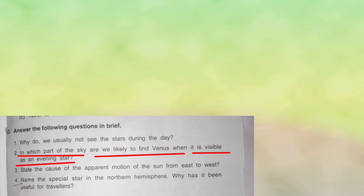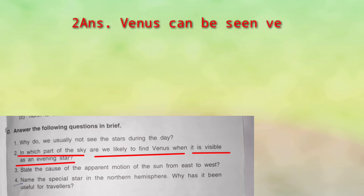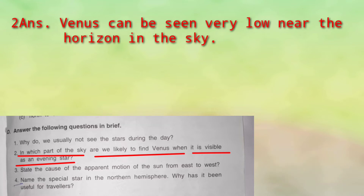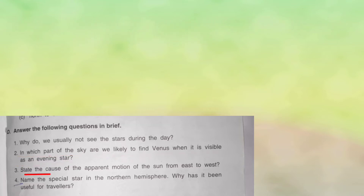Venus can be seen very low near the horizon — jahaan par hume zameen se khade hokar dekhe toh woh dikhta hai. Next: state the cause of apparent motion of sun from east to west. Jo motion of sun hai, sun east se nikalte hue aur west mein chhipte hue dikhai deta hai, toh us ka reason kya hai?